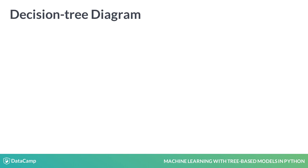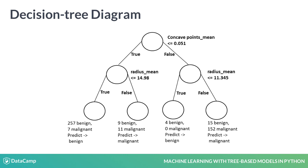When a classification tree is trained on this dataset, the tree learns a sequence of if-else questions with each question involving one feature and one split point. Take a look at the tree diagram here. At the top, the tree asks whether the concave point's mean of an instance is smaller or equal to 0.051. If it is, the instance traverses the true branch; otherwise, it traverses the false branch. Similarly, the instance keeps traversing the internal branches until it reaches an end. The label of the instance is then predicted to be that of the prevailing class at that end. The maximum number of branches separating the top from an extreme end is known as the maximum depth, which is equal to 2 here.